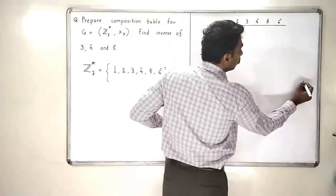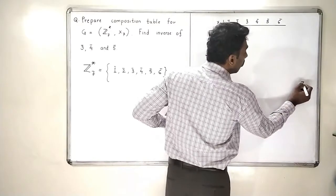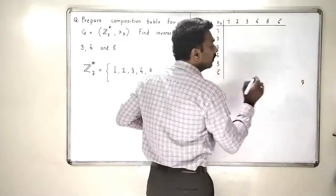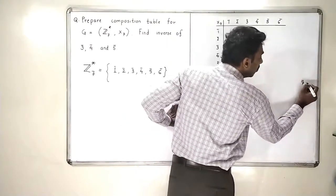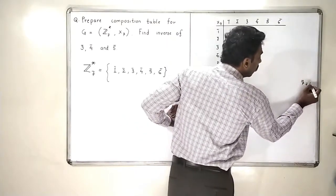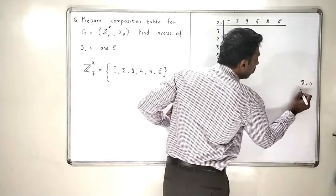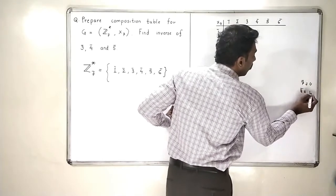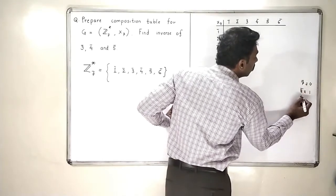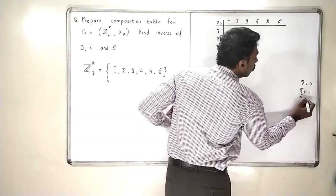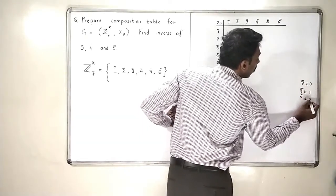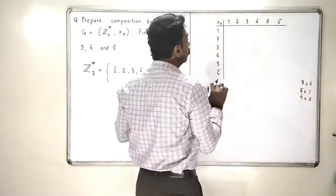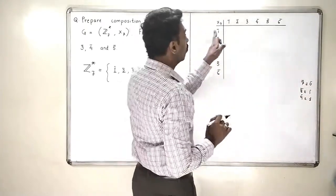Using multiplication modulo 7 means: if 7 comes, it is equivalent to 0; 8 is equivalent to 1; 9 is equivalent to 2-bar, and so on. This is the equivalence we will use throughout.